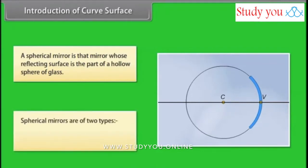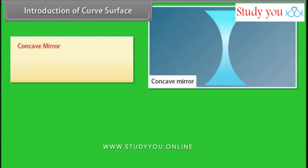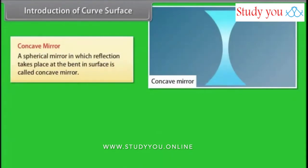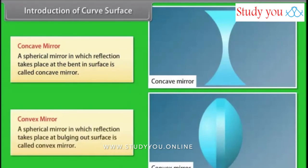Spherical mirrors are of two types: concave mirror and convex mirror. A concave mirror is a spherical mirror in which reflection takes place at the bent-in surface. A convex mirror is a spherical mirror in which reflection takes place at the bulging-out surface.